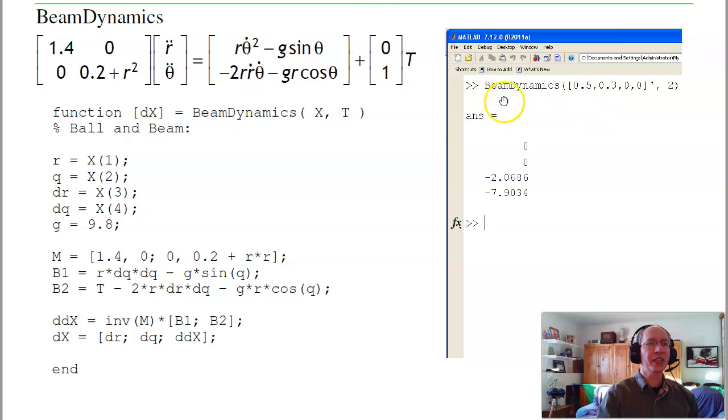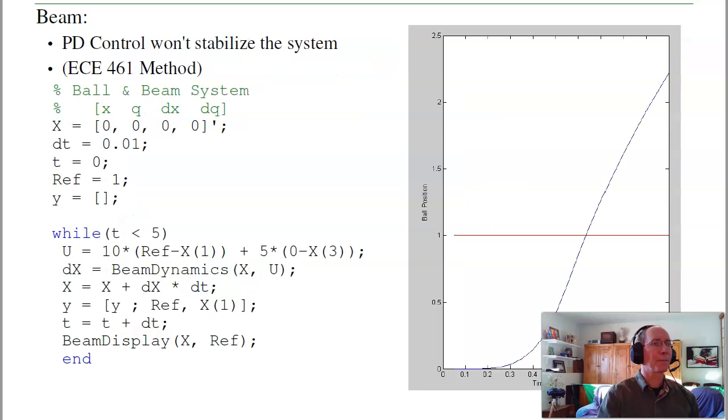You can try that. Say, what are the beam dynamics? My torque is 2, the position is 0.5, 0.3. And it says, here's the acceleration: x dot, θ̇, r̈, θ̈.